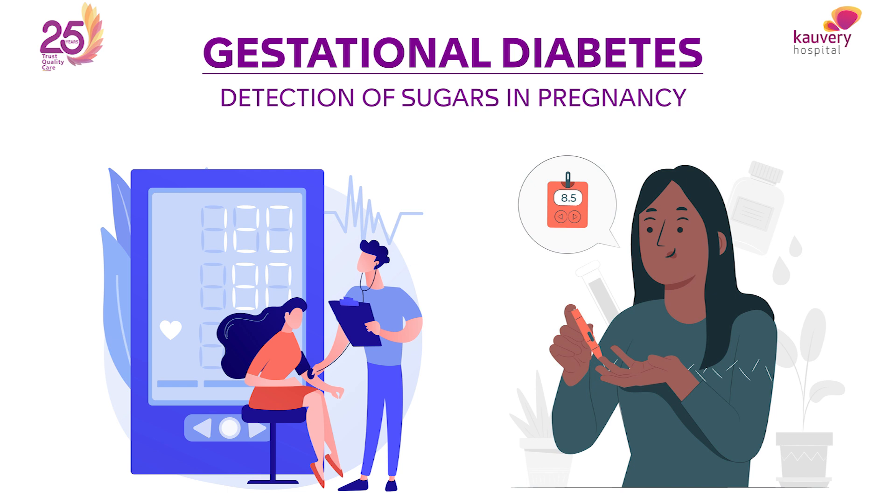Gestational Diabetes is the detection of sugar in pregnancy. Detection of sugar in any part of pregnancy is called Gestational Diabetes.